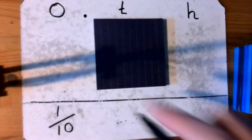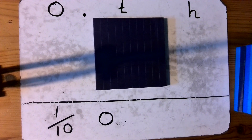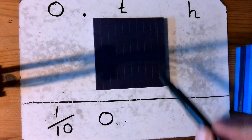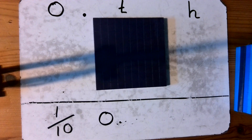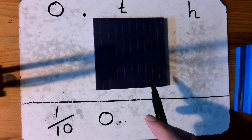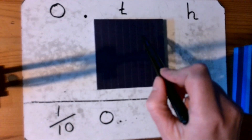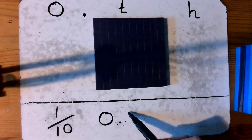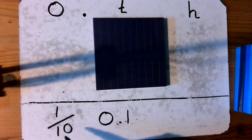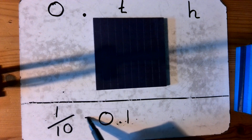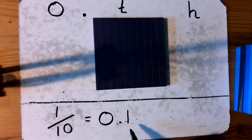So I can see that I have no ones. I need to add my decimal point in so I know that I'm no longer dealing with whole numbers and that I'm dealing with decimal numbers or a fraction. So in my tenths column I have one tenth. So one tenth is equivalent to — is equal to — zero point one.